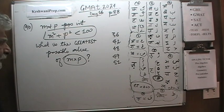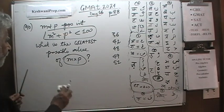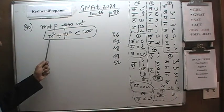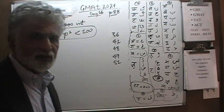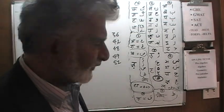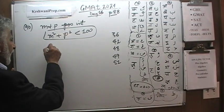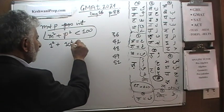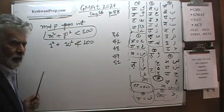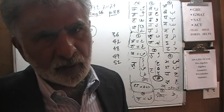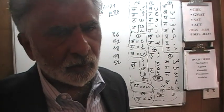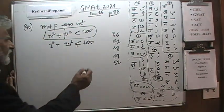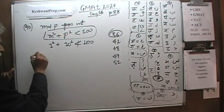The very first thing we need to understand: because the sum of their squares must be less than 100, neither value can be a two-digit number. Even if you take the smallest value for m — one squared — and take p as 10, then 10 squared is 100, which is not less than 100. So both m and p must be single-digit numbers. Let's begin by testing the answer choices.